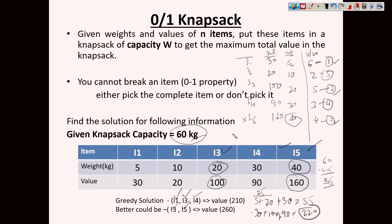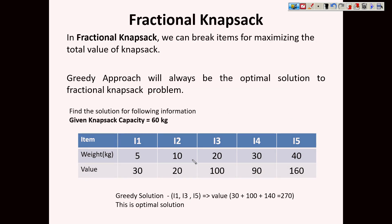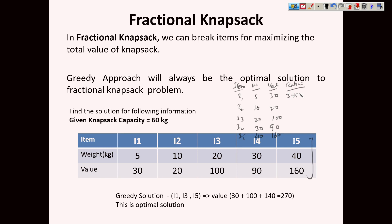Now let us look at the Fractional Knapsack version of the same problem. We have the same items with the same weights and values. We find the ratio V/W: item 1 = 30/5 = 6, item 2 = 2, item 3 = 5, item 5 = 160/40 = 4. We rank them accordingly — item 1 is first choice, item 3 is second, and so on up to fifth choice.